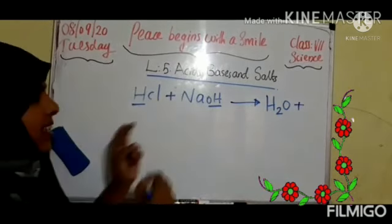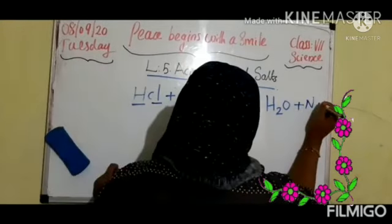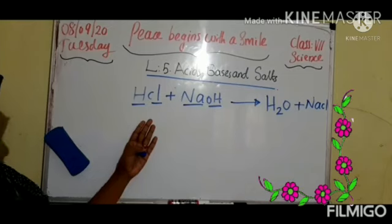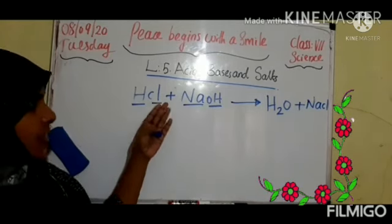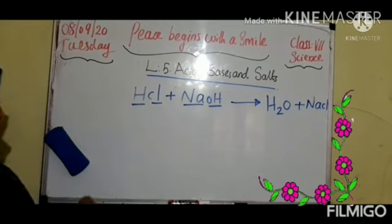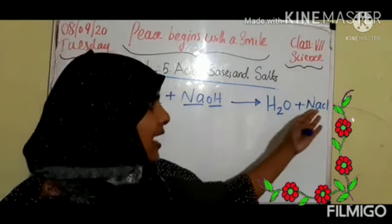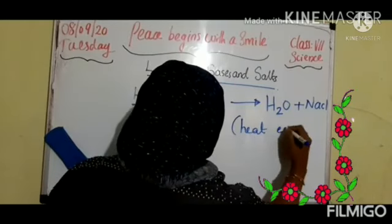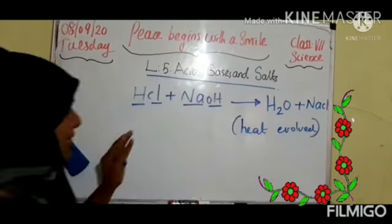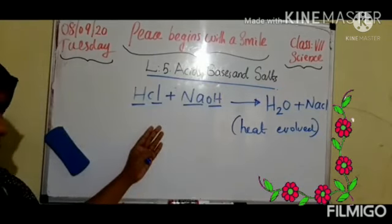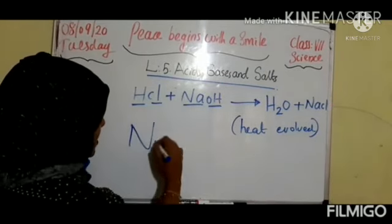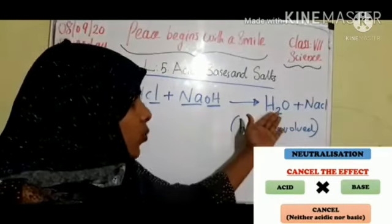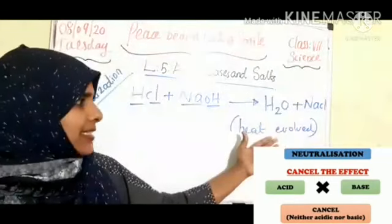And what else, children? NaCl — that is NaCl. So in this reaction, when hydrochloric acid mixes with sodium hydroxide, we will get water and salt, NaCl. Heat is also evolved in this reaction. When acid mixes with sodium hydroxide, we will get water and sodium chloride, that is salt.